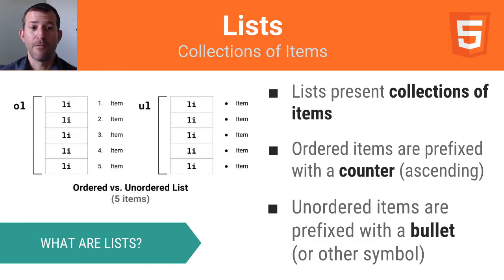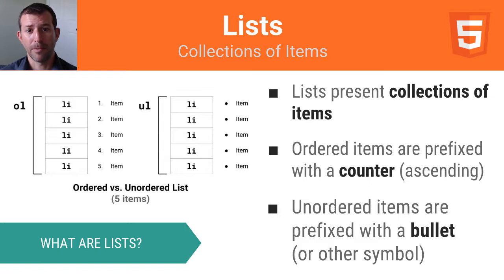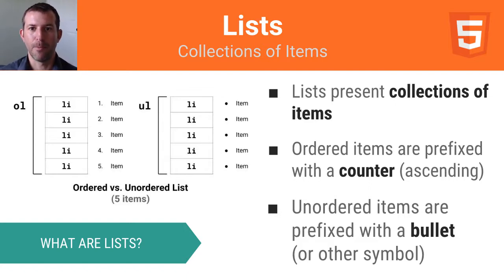Lists are a little bit more straightforward. We have two different types: an OL element and a UL element. OL stands for ordered list and UL stands for unordered list. Lists are just collections of related items that you can choose to either order or not. If you order something it will be prefixed by a number; if you use an unordered list there will be a bullet prefixing each item. Both types contain the same kind of list item element.